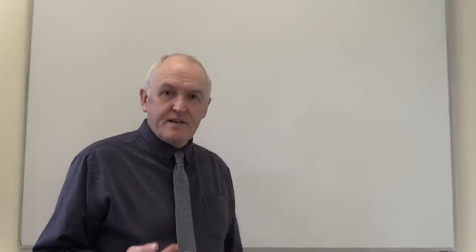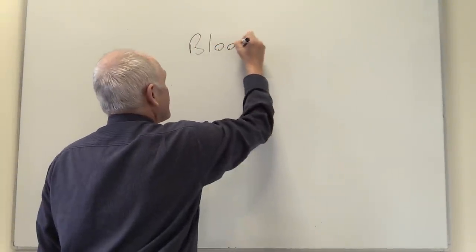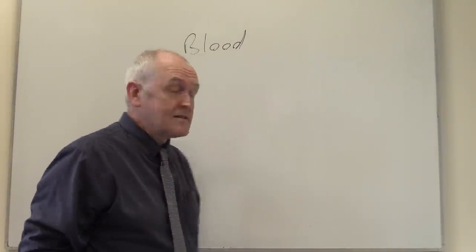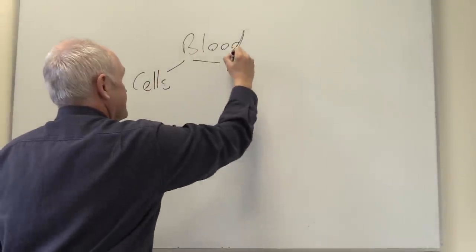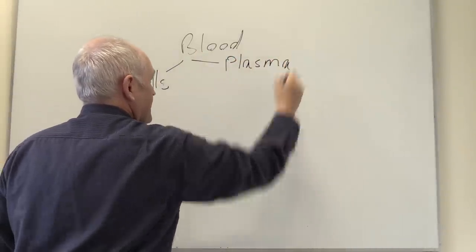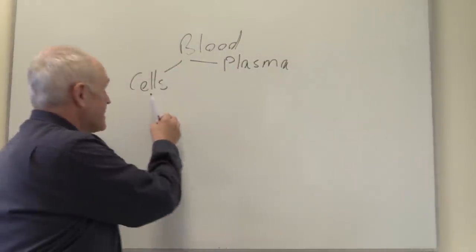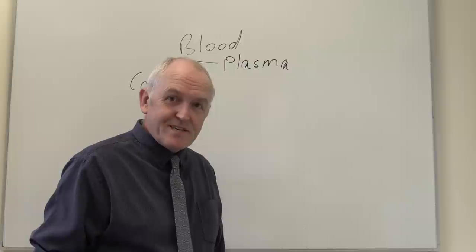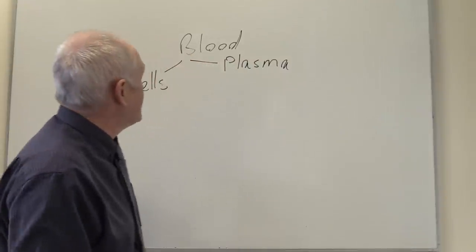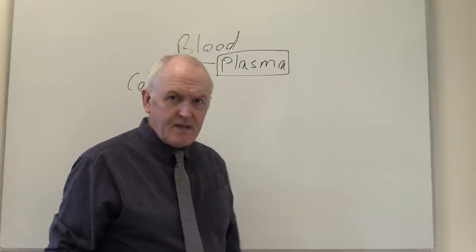We're going to look at blood, and in this video particularly we want to consider the plasma. In blood there are cells and there is plasma. The cells are going to be the red cells and the white cells, the erythrocytes and the leukocytes, but today we want to think about the plasma that they are floating in.